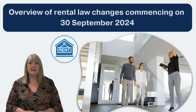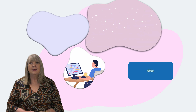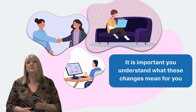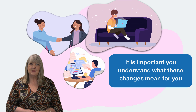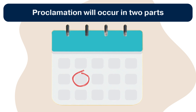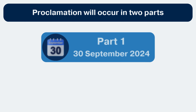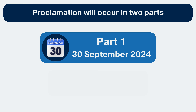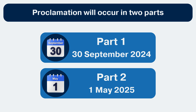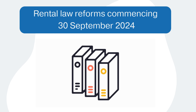The Queensland Government has announced start dates for new rental laws commencing on Proclamation. If you are a property manager, owner or tenant, it is important you understand what these changes mean for you. Please note the changes to rental laws will commence in two parts over the coming months: Part 1 starting on 30 September 2024, and Part 2 which will commence on 1 May 2025. This video is an overview of changes that will commence on 30 September 2024.